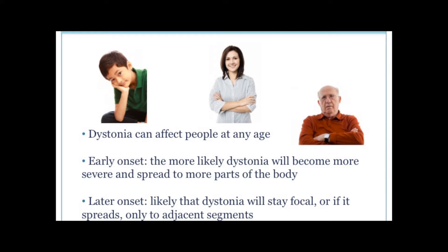Patients with onset in middle to late years of life usually develop focal dystonia, such as affecting only the neck or the face. Although the dystonia may spread to some adjacent body parts, such as from the neck to the face, spread to involve the limbs or entire body is very uncommon.